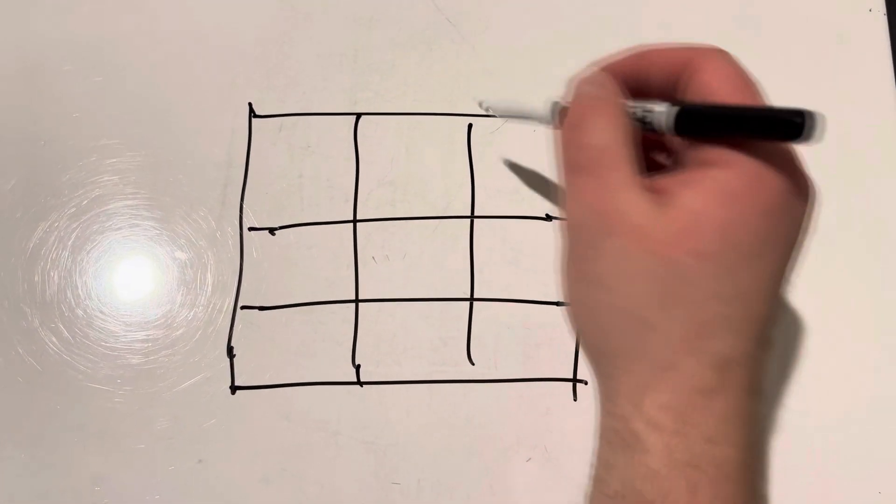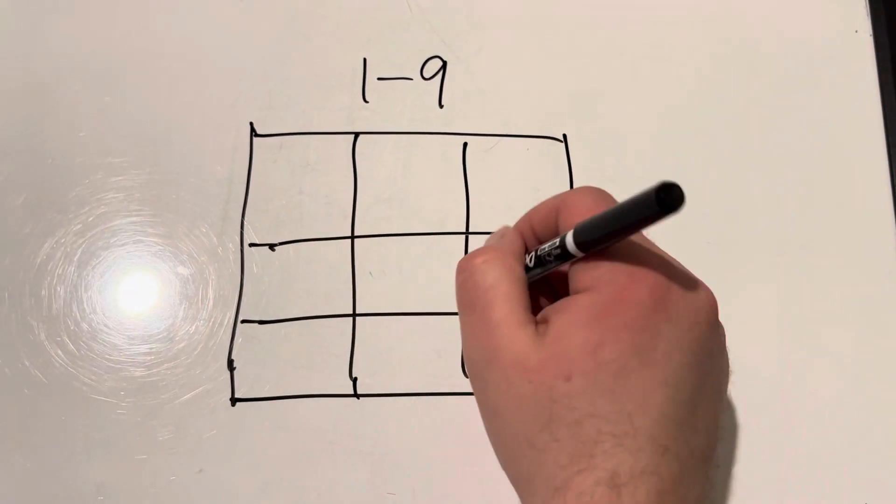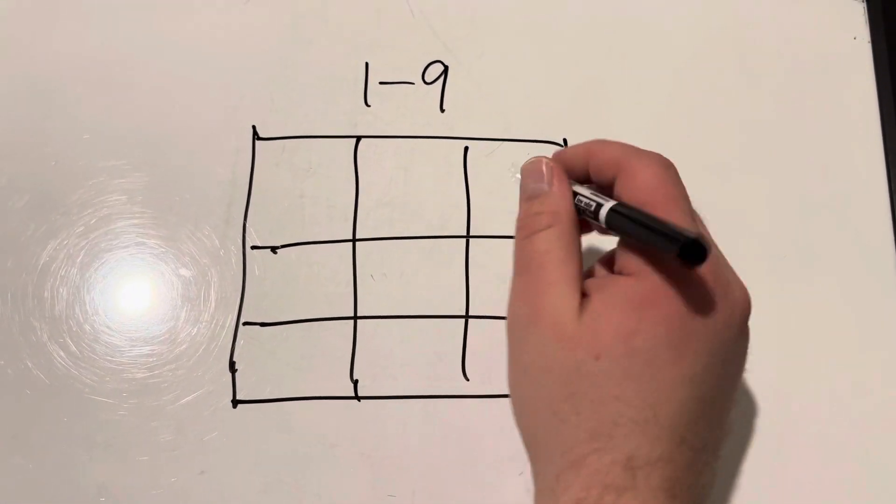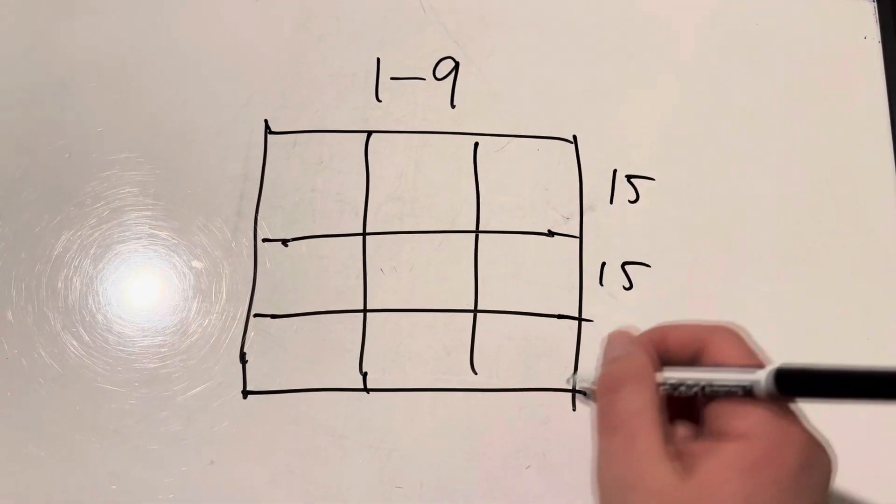What you want to do, the puzzle, is to use the numbers one through nine and make it so that no matter how you add up the three numbers, they will all add up to 15.